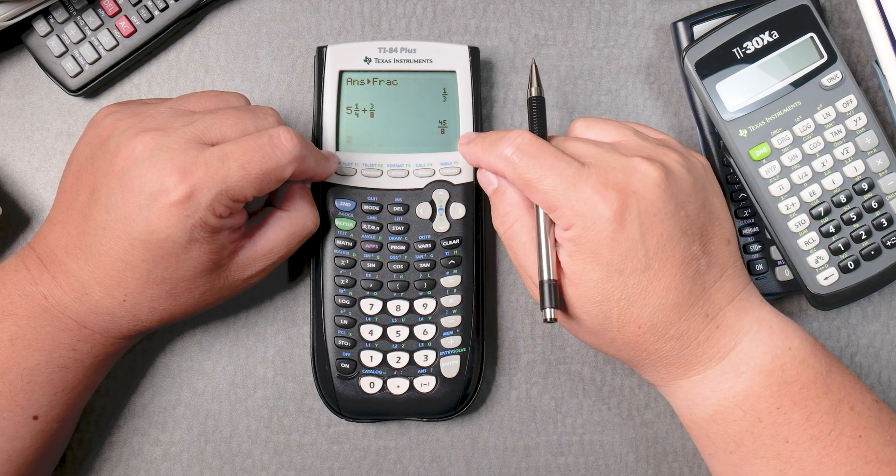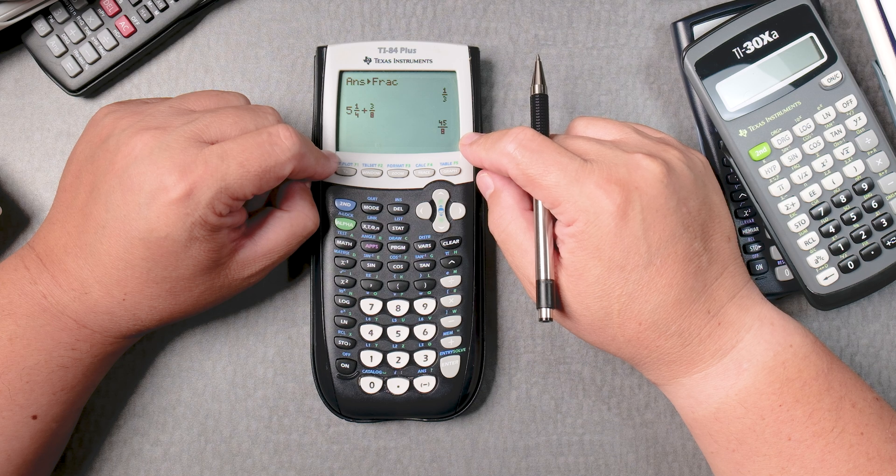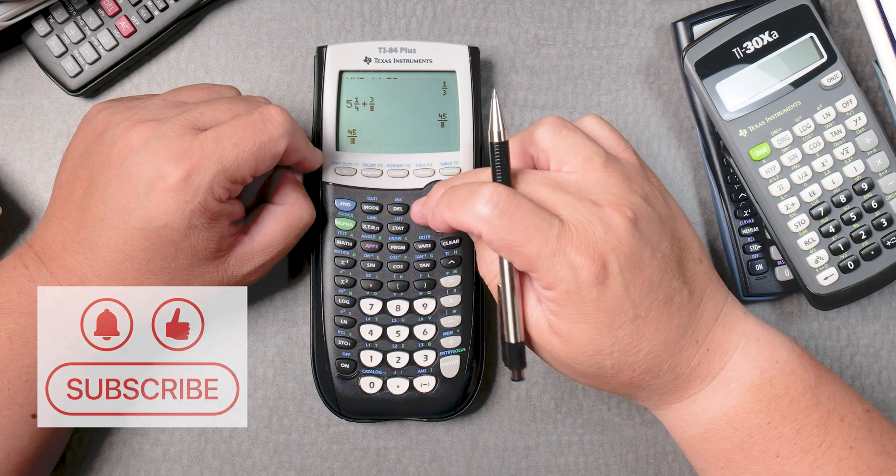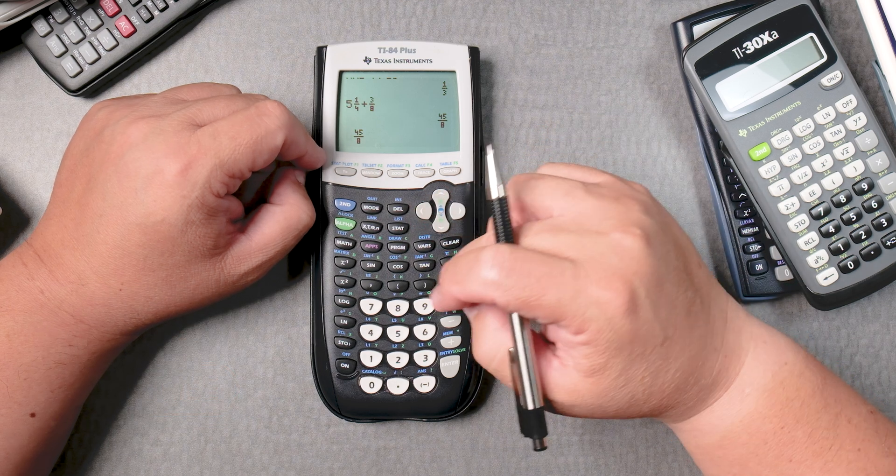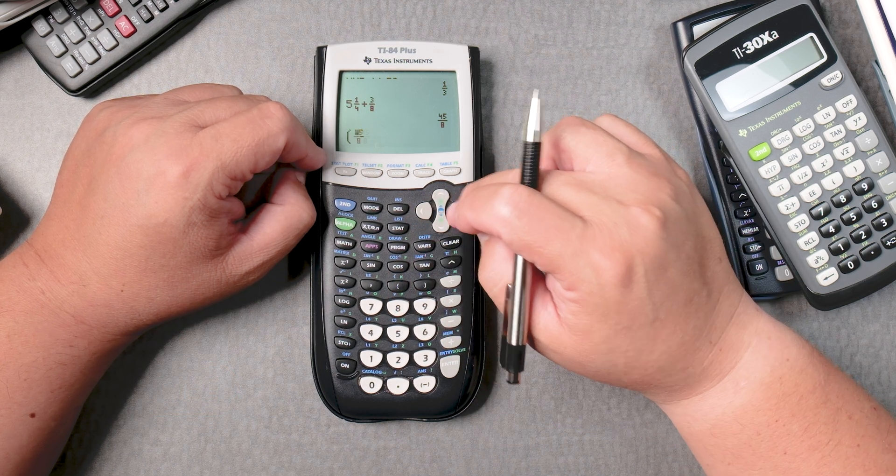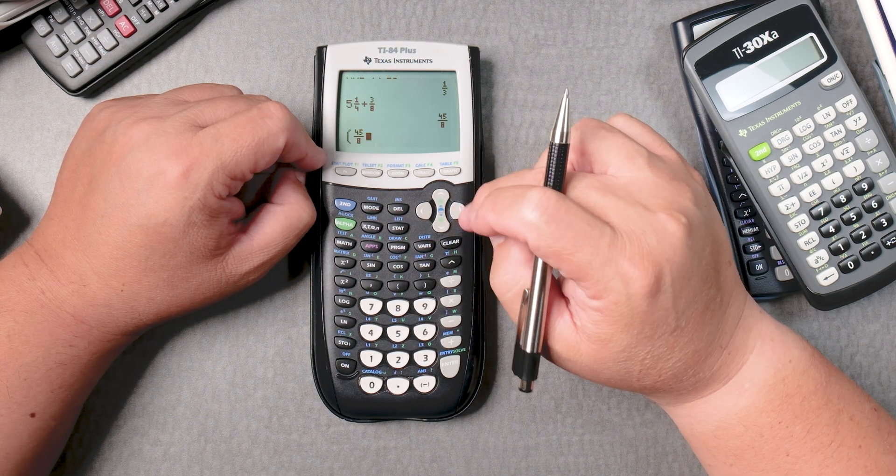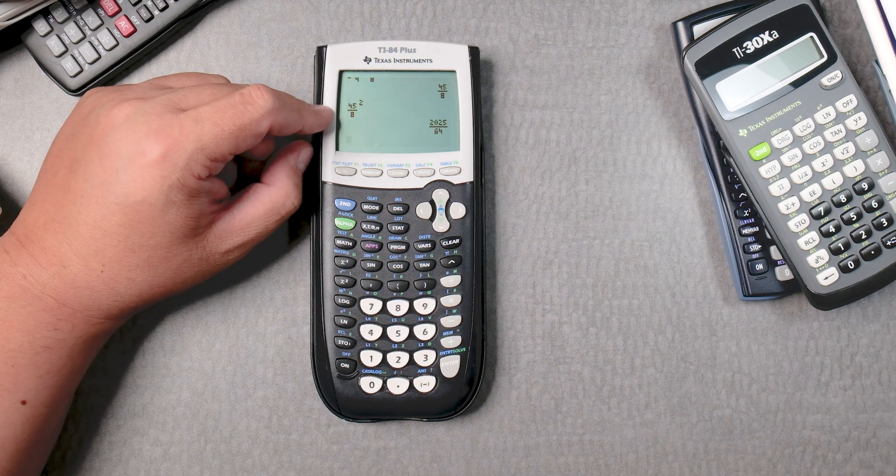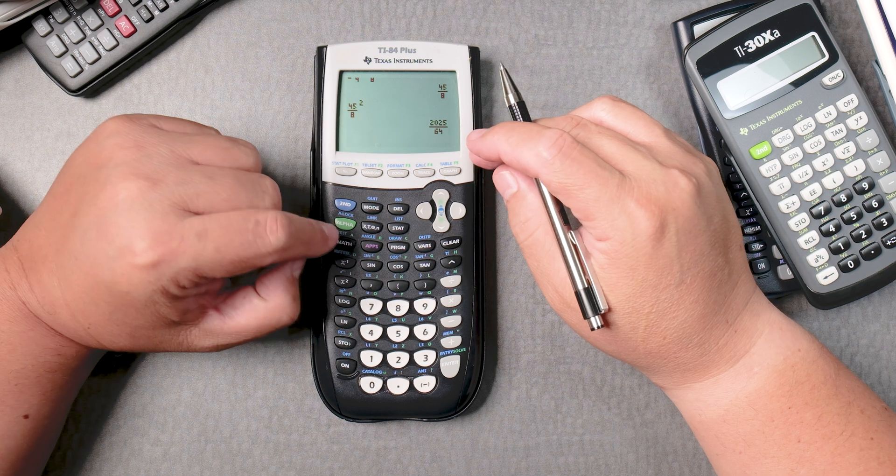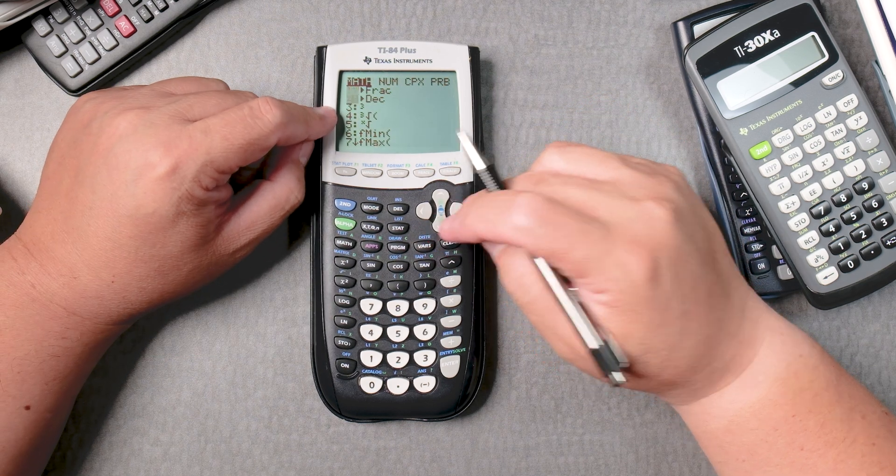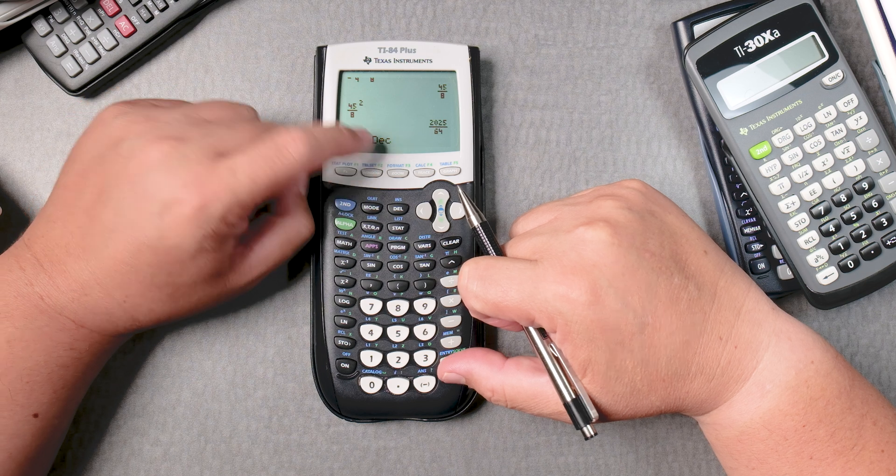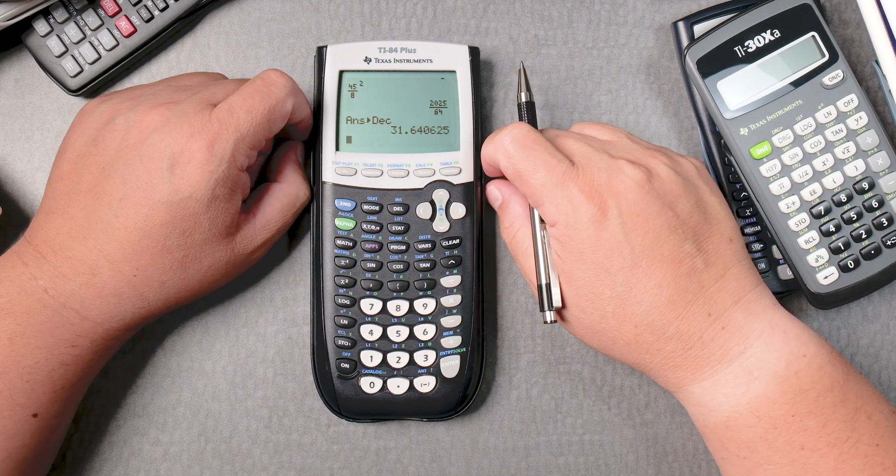You can use 45 over 8. Let's say you copy this and you want to square it. You can put parentheses, close the parentheses, and then square it. So you can take these fractions and square them. And then you can go to MATH and get a decimal. Take the answer automatically and make it a decimal. There it is.